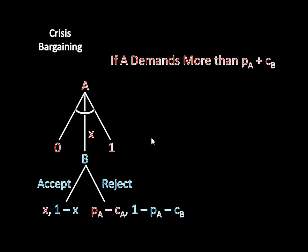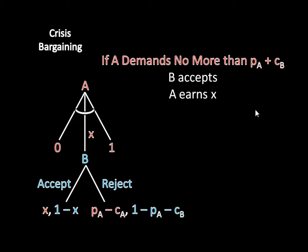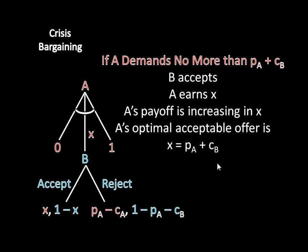So now let's think about this from A's perspective. If A demands more than pA plus cB, then what happens? Well, B rejects, and A earns pA minus cA. Now that's one thing that could happen. The other thing that could happen is that A demands less than or equal to pA plus cB. So what happens if A demands no more than pA plus cB? Well, B is going to accept that, and A earns x. Now here's a little bit of a tricky part here. A's payoff is increasing in x. Remember that A's demand size is x, so x is the amount that A gets to keep. A obviously wants to keep as much as it possibly can, so A's payoff is therefore increasing in x and wants to make x as large as it possibly can, given the fact that if A makes too much of an offer or too much of a demand, then B is going to reject. And so A's optimal acceptable offer here is pA plus cB, right? Because if A were to demand anything less than that, A could demand just slightly more and get B to accept that offer. So that's why A's optimal demand is the most that B is willing to let A have without starting a war.